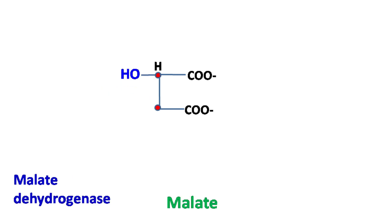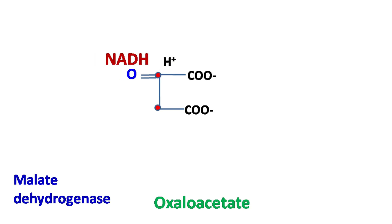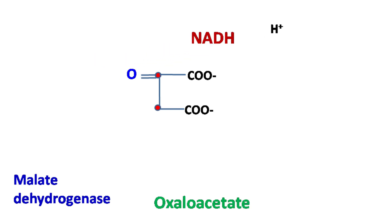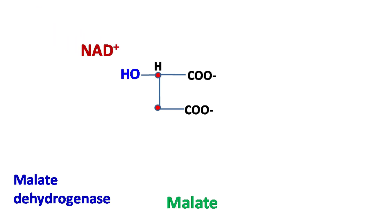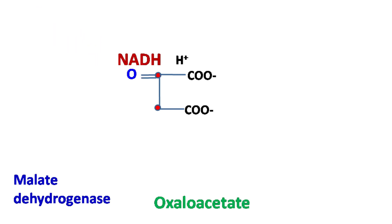Malate dehydrogenase then converts malate to oxaloacetate. NAD+ gets converted into NADH and H+, and it is a reversible reaction.